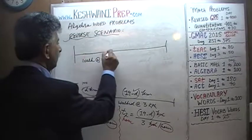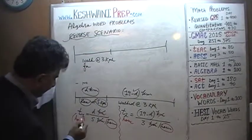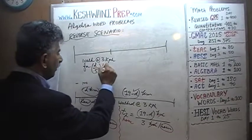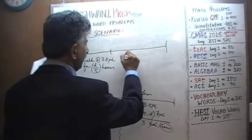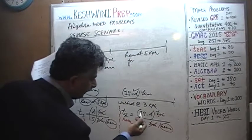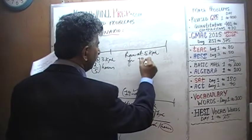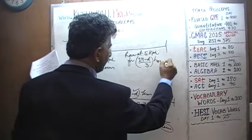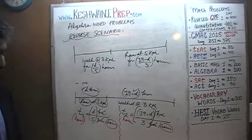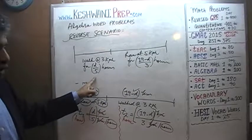So in the reverse scenario, we are going to walk at 3 kilometers per hour for D over 5 hours - that is the time period held constant. And then we are going to run at 5 kilometers per hour for 19 minus D over 3 hours. These are the time periods we extracted: D over 5 is the time we run in the reverse scenario, and 19 minus D over 3 is the time we walk in the reverse scenario.